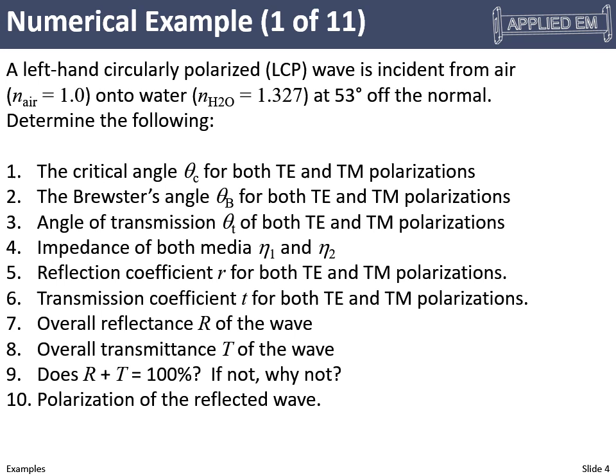Here's our problem. We have a left-hand circularly polarized wave and it's incident from air onto water at a 53-degree angle of incidence. Based on that and the refractive indices given in the problem, we want to calculate a bunch of stuff.